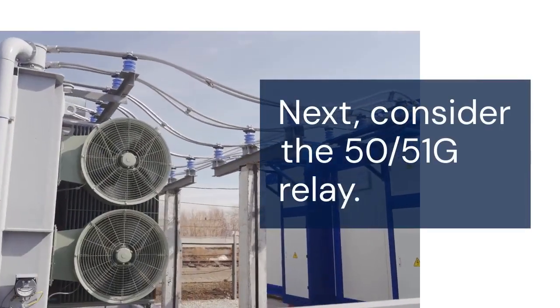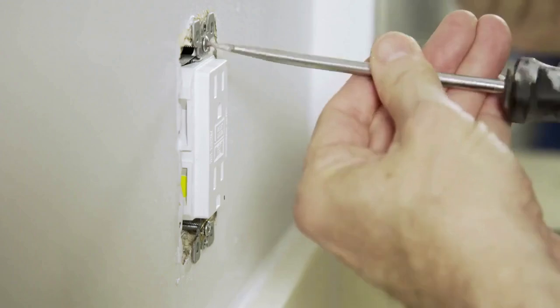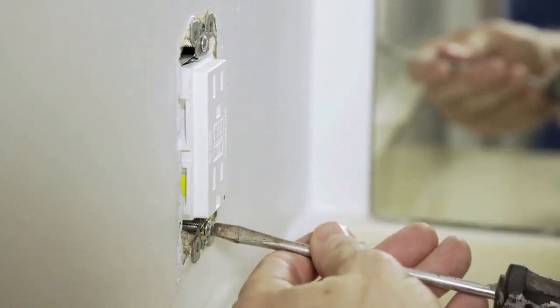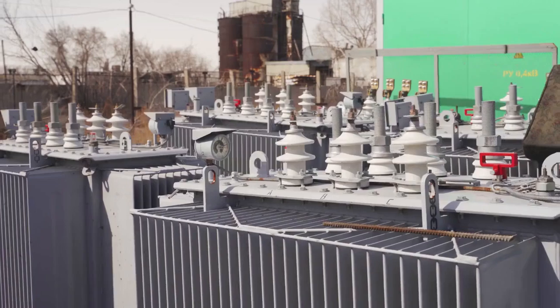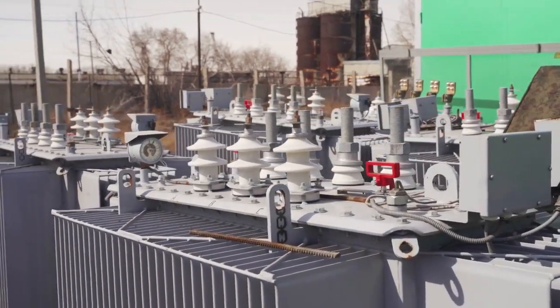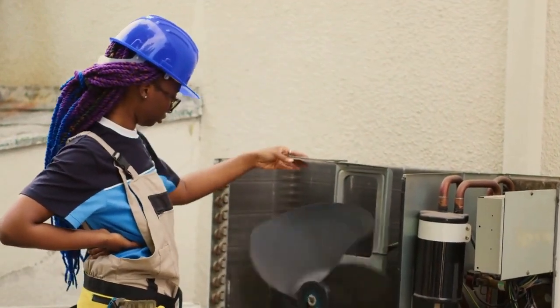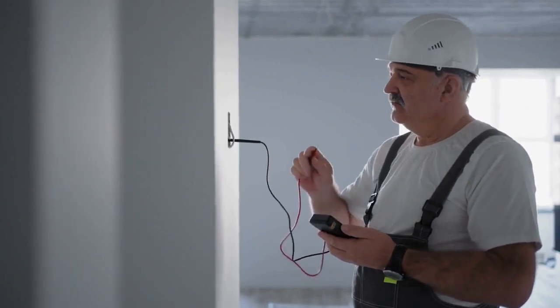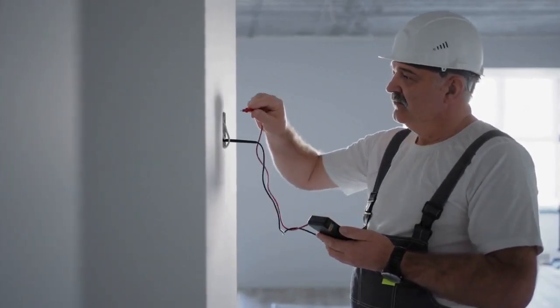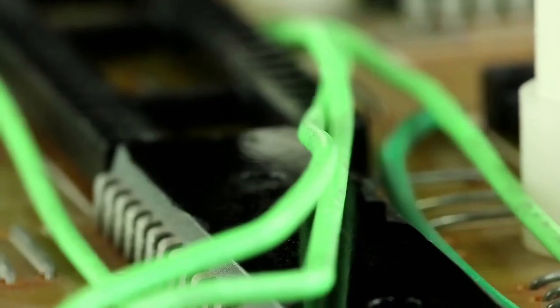Consider the 50-51G relay. G indicates ground. This relay monitors the current flowing directly to ground. It usually uses a dedicated ground current transformer, or GCT. The GCT encircles all phase conductors and the neutral. In a healthy system, the currents cancel out. But during a ground fault, a net current flows to ground, which the GCT detects, and the 50-51G relay then trips.